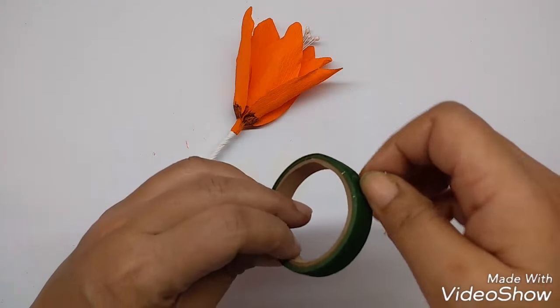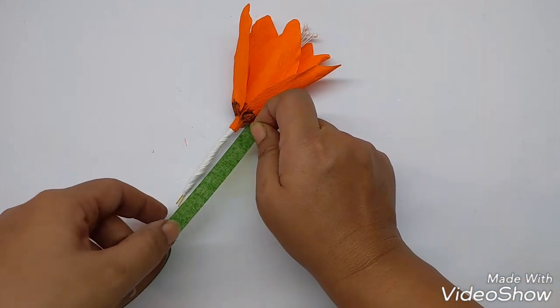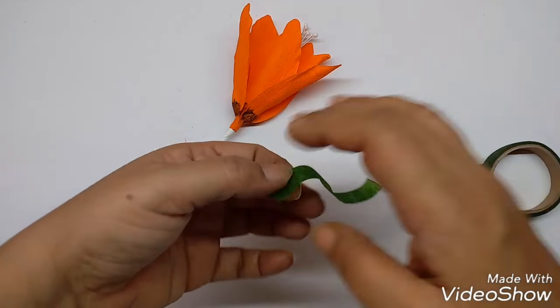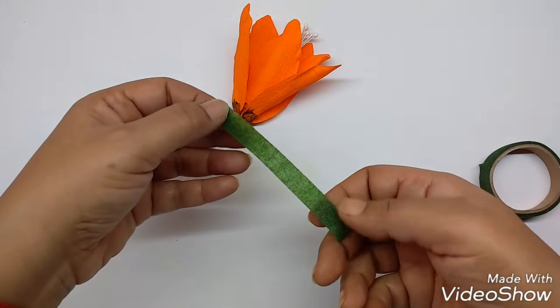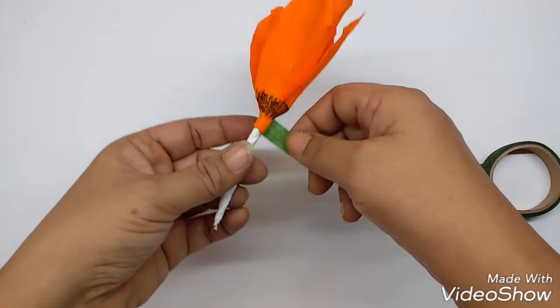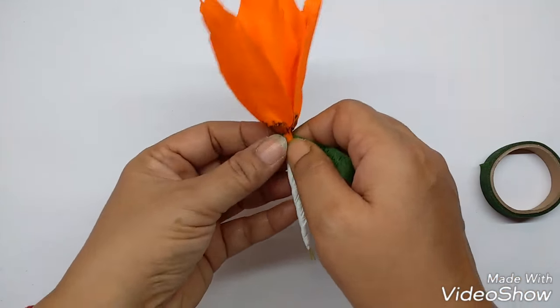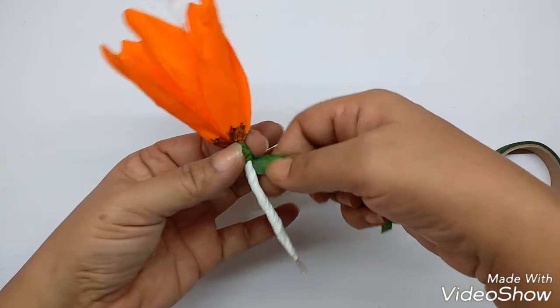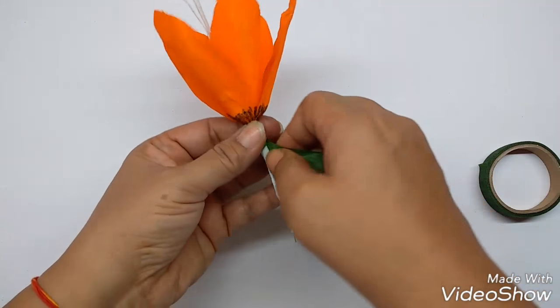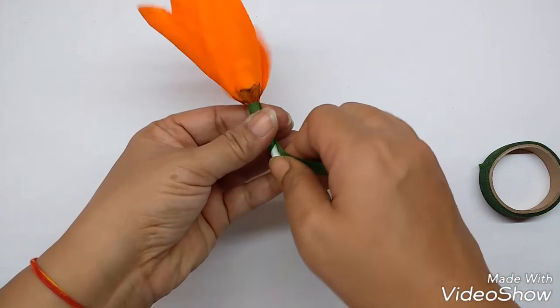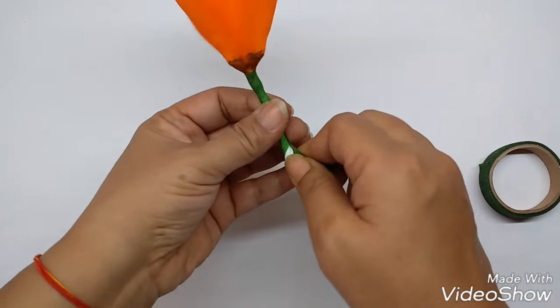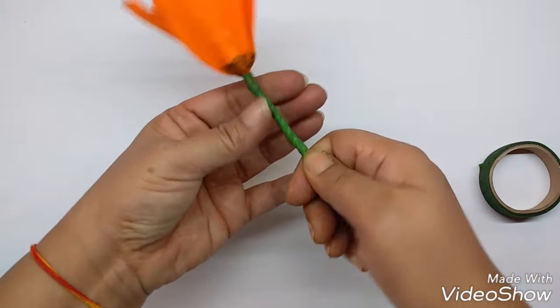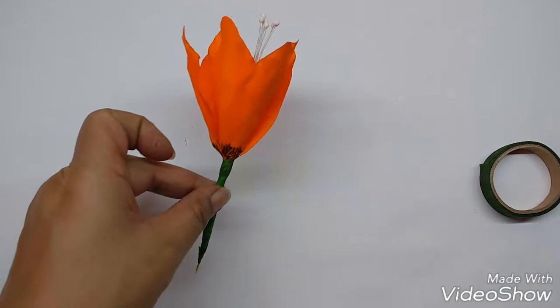Take the green floral tape. And take a slightly long piece. Almost the length of the stem. Stretch it and wind this on the base of the flower till the end of the stem. And do it tightly so that there is no air as such. We don't want a very thick stem. So just wind it tightly like this. This is the flower we get.